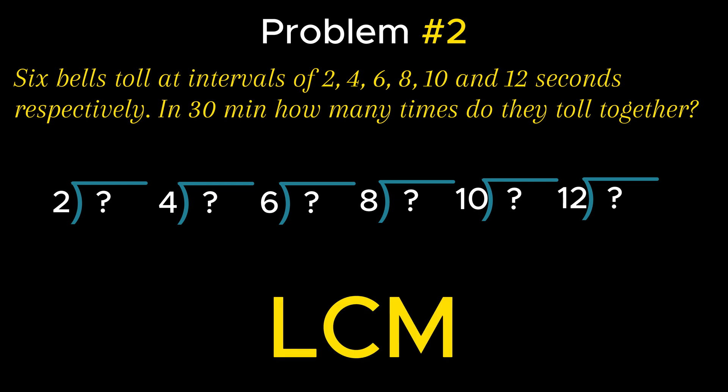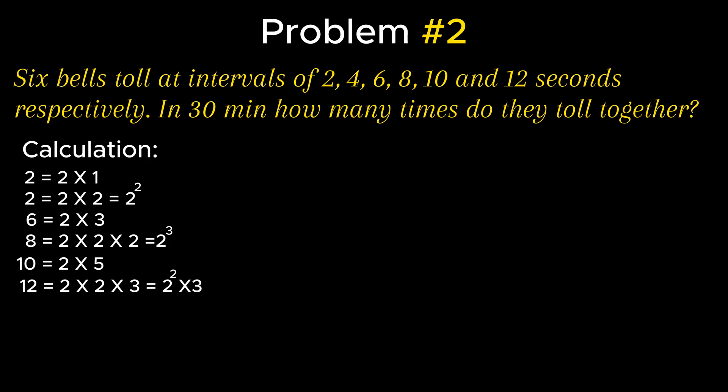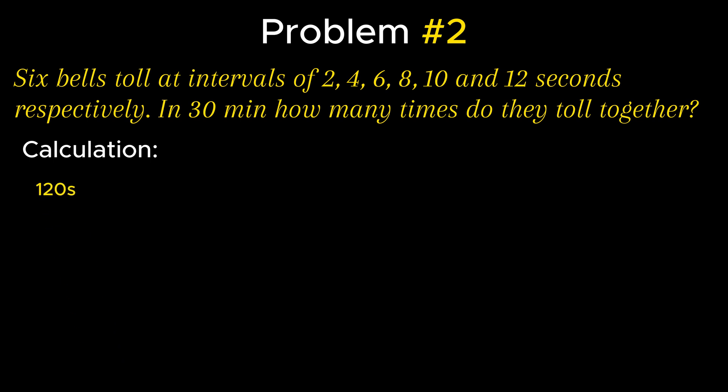To calculate the LCM, the product of each factor with the highest powers is considered, which is equal to the product of 2 raised to the power 3, 3, and 5, which on simplification becomes 8 × 3 × 5, giving 120 seconds. Since there are 60 seconds in 1 minute, 120 seconds equals 2 minutes. This means all 6 bells will toll together after every 2 minutes.